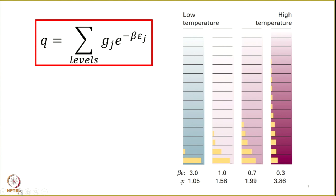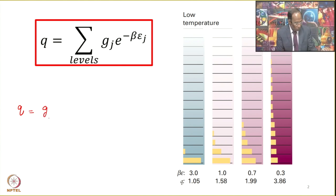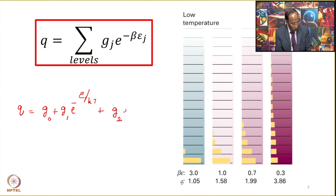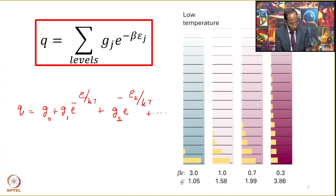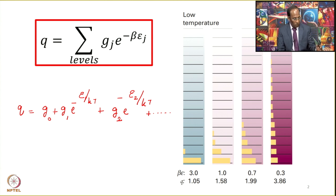Let me write once again that q equals G₀ plus G₁·exp(−E₁/kT) plus G₂·exp(−E₂/kT) and so on. Therefore, as the temperature increases and more and more upper levels become populated, the value of q will start increasing.